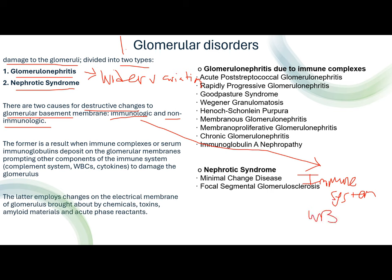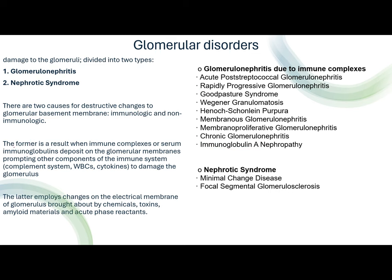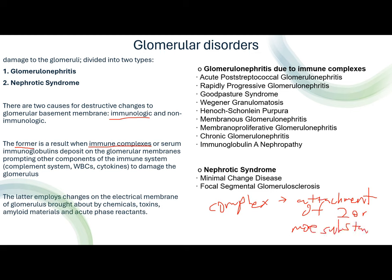Immunologic causes specifically involve our WBCs and antibodies. The immunologic cause is a result when immune complexes — meaning the attachment of two or more substances such as serum immunoglobulin — deposit on the glomerular membrane, prompting other components of the immune system such as the complement system, WBC, and cytokines to damage the glomeruli.